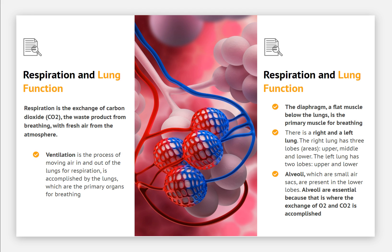Respiration and Lung Function. Respiration is the exchange of carbon dioxide — the waste product from breathing — with fresh air from the atmosphere. Ventilation is the process of moving air in and out of the lungs, accomplished by the lungs, which are the primary organs for breathing. The diaphragm, a flat muscle below the lungs, is the primary muscle for breathing. There is a right and a left lung. The right lung has three lobes — upper, middle, and lower. The left lung has two lobes: upper and lower.